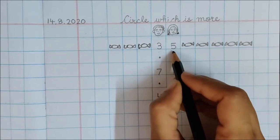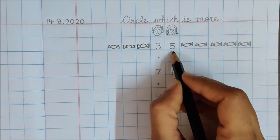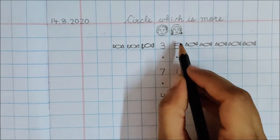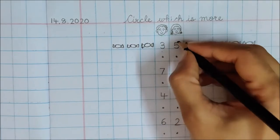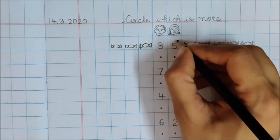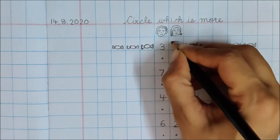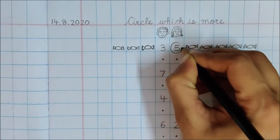Papa or mama? Who got you more toffees? Mama. Your mama got you 5 toffees. So circle the number which is more. 5 is more. So circle 5.